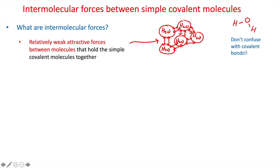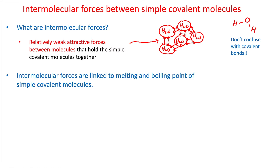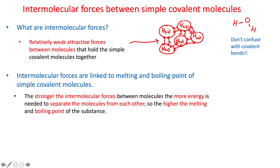When we want to melt ice, we have to break those intermolecular forces. If we want to turn water into a gas, we again need to break those intermolecular forces to allow the water molecules to escape from each other. We are not breaking the covalent bonds, which would separate the molecule into its separate atoms. Intermolecular forces are linked to melting and boiling point - the stronger those intermolecular forces, the more energy is needed to separate the molecules, so the higher the melting and boiling point.